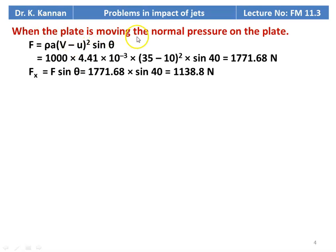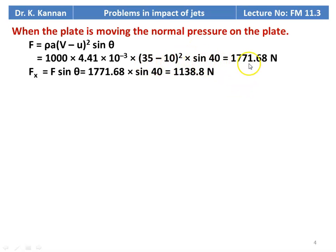When the plate is moving, the normal pressure on the plate F = rho × A × (V − U)² × sin(theta), where V is the velocity of the jet and U is the velocity of the plate. Substituting: 1000 × 4.41 × 10⁻³ × (35 − 10)² × sin(40°) = 1771.68 N.